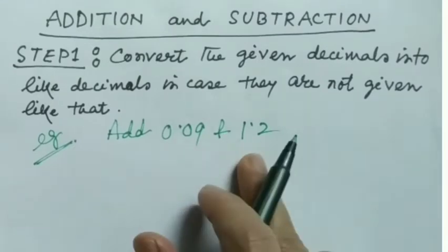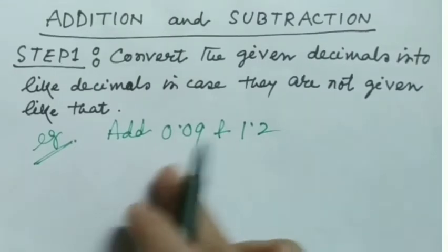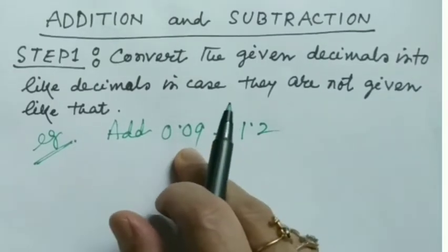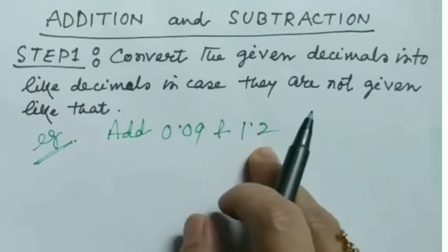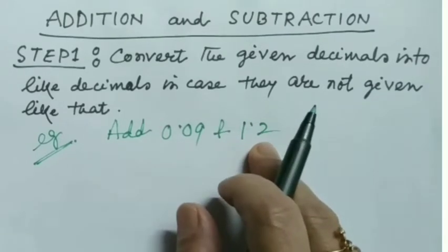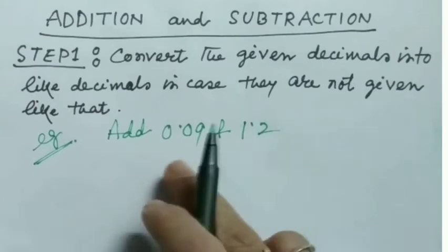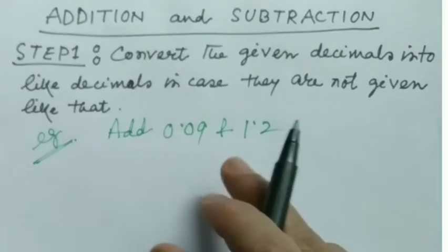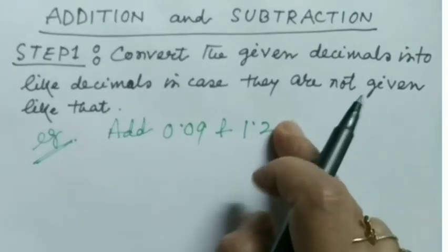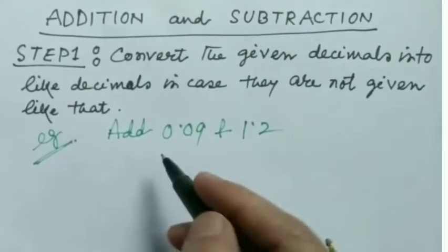Here you see these are not like decimals because after this decimal point two digits are there and here only single digit. So let's make these numbers into like decimals by adding one zero here in this number: 0.09 and 1.20. This is our first step.